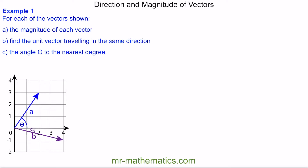In this video, I'm going to show you how to work out the direction and magnitude of vectors. You can see in this grid we have two vectors, vector A and vector B. For each vector, we're going to work out its magnitude, find a unit vector traveling in the same direction, and work out the angle theta to the nearest degree.